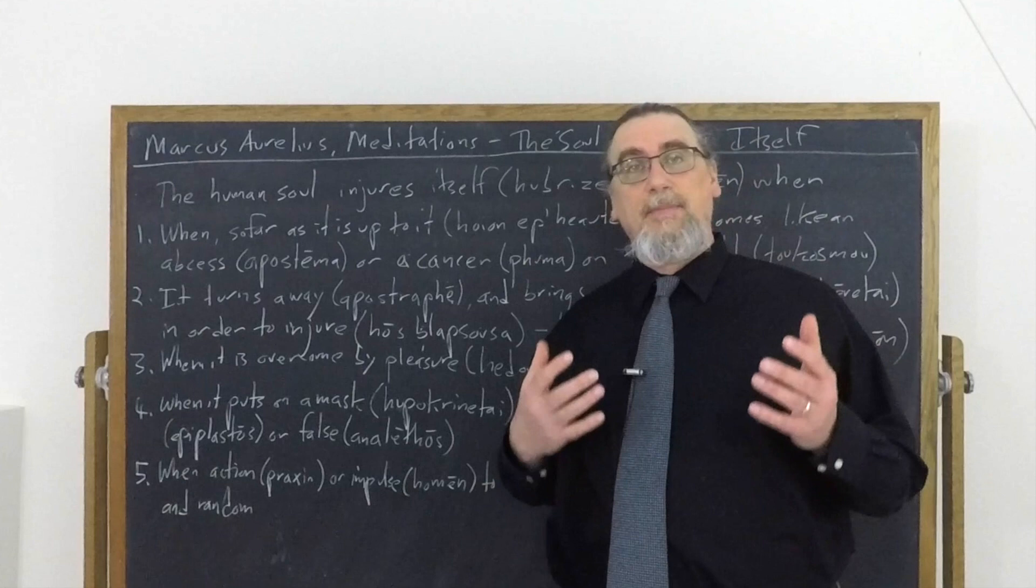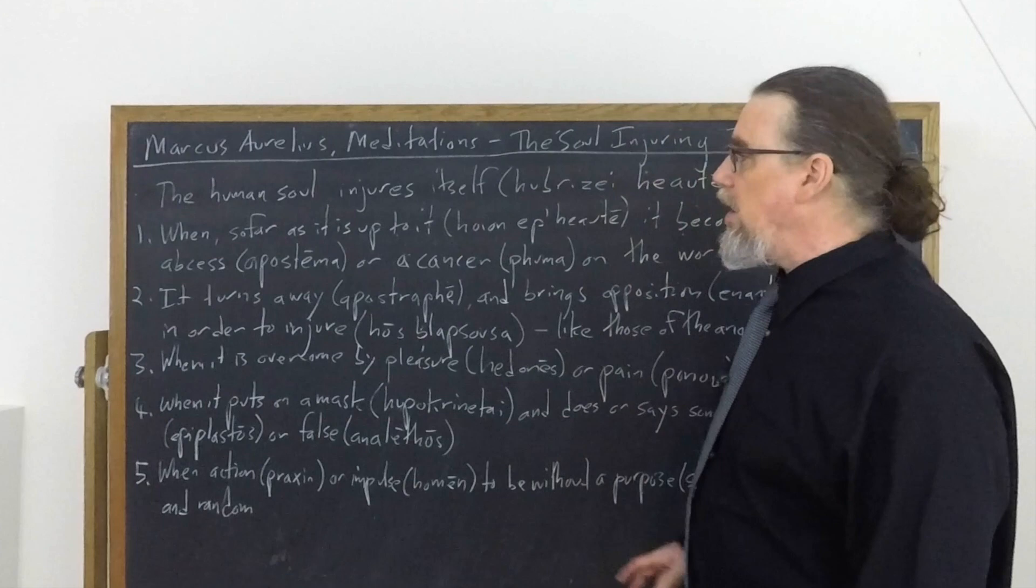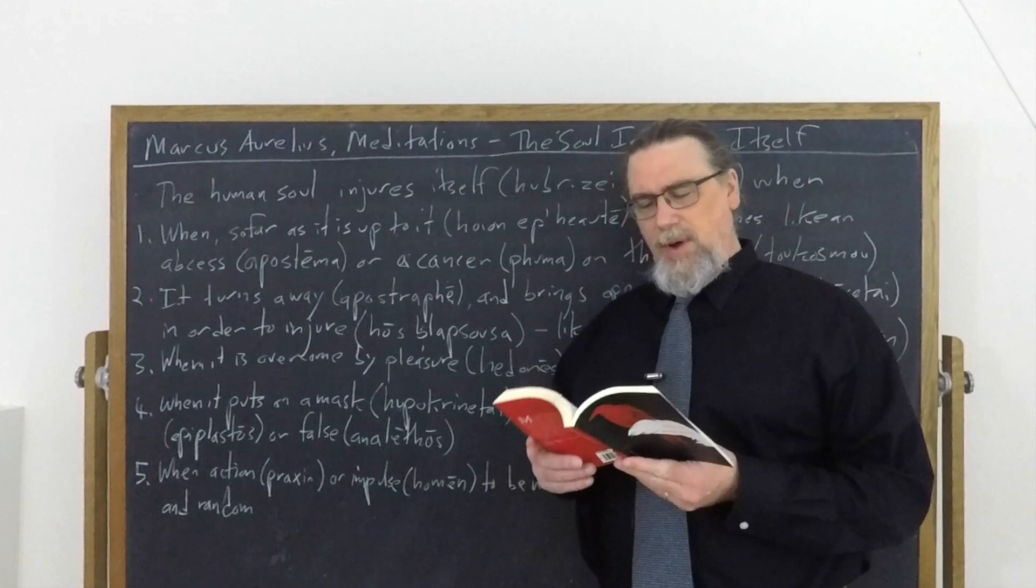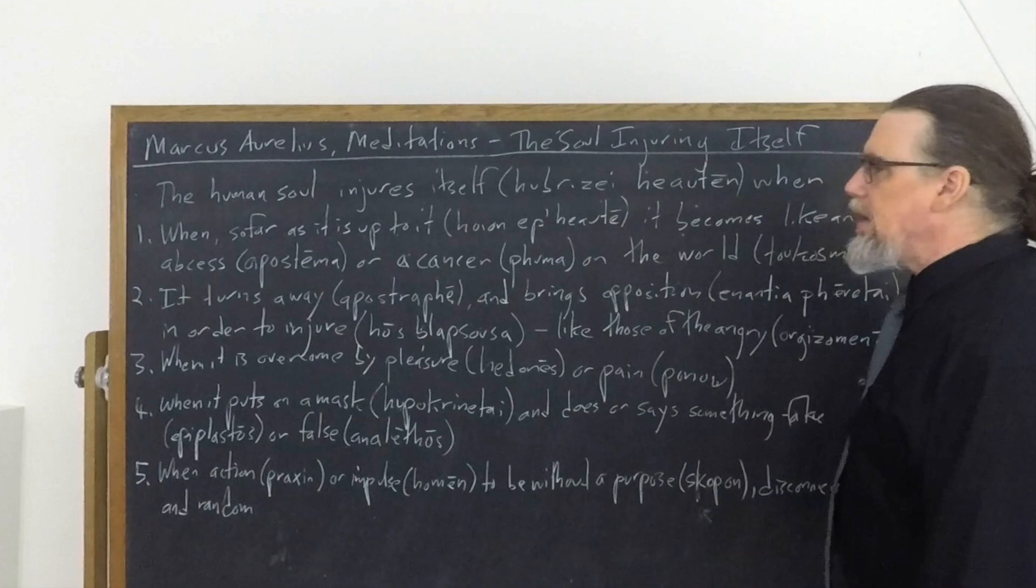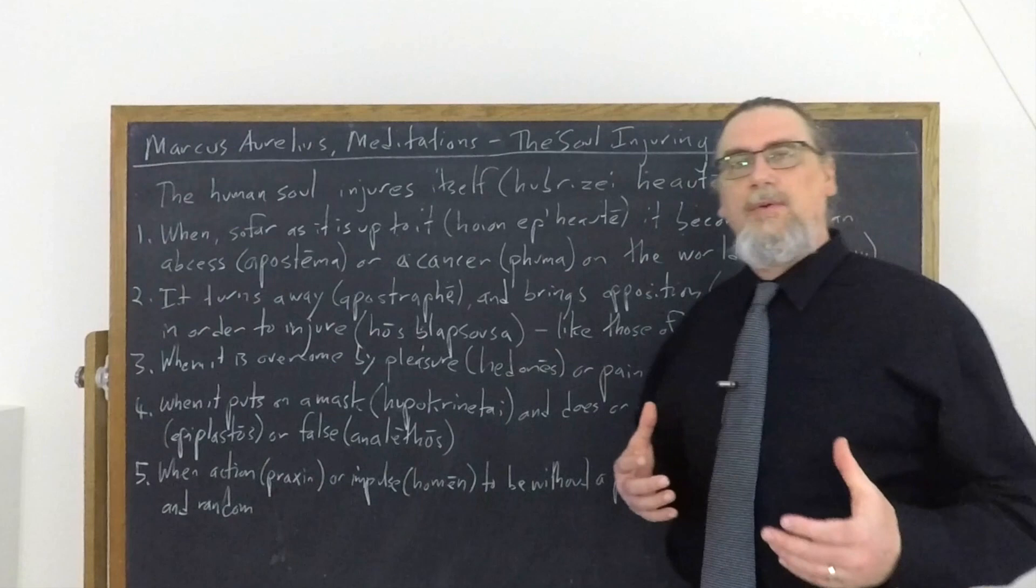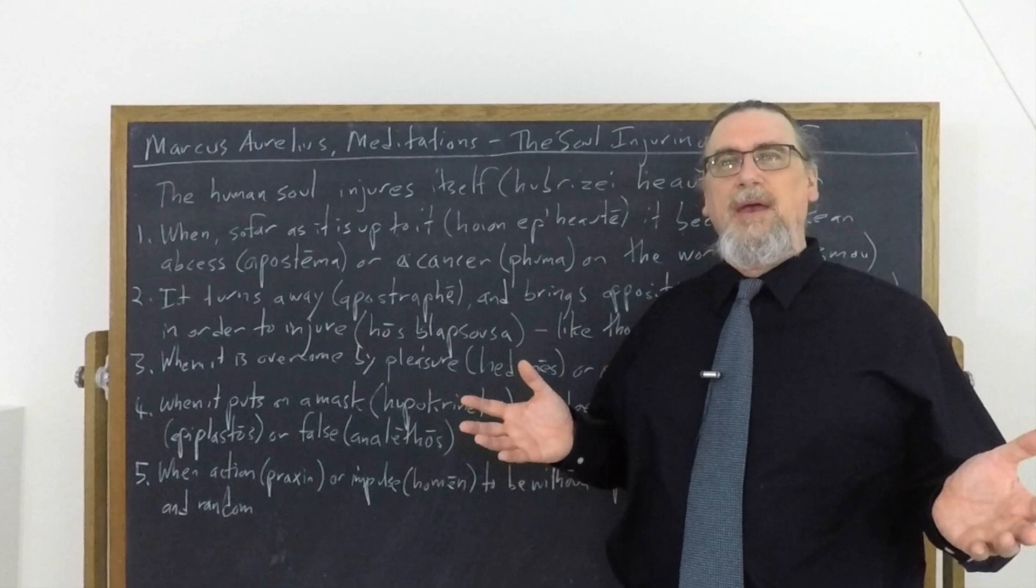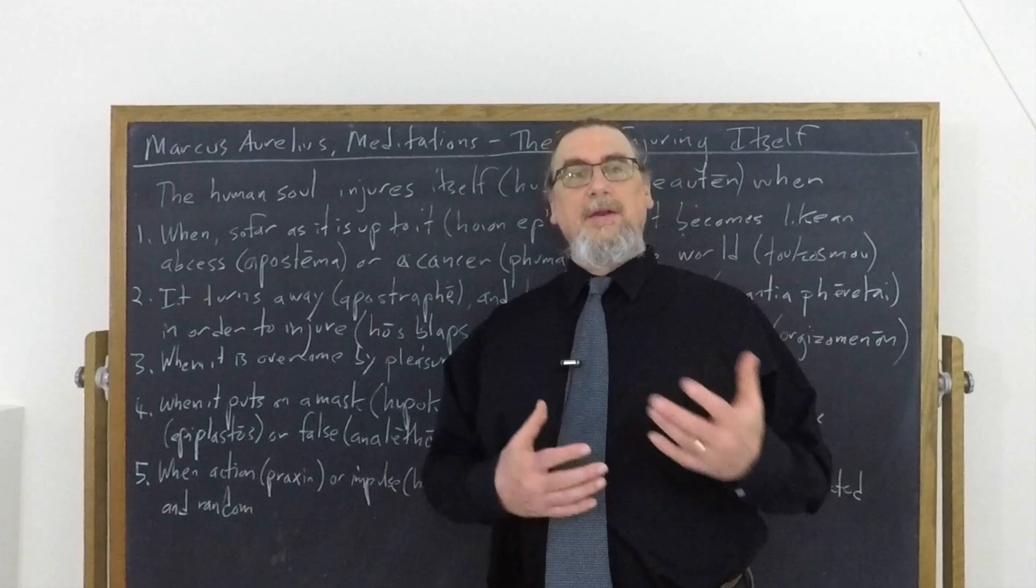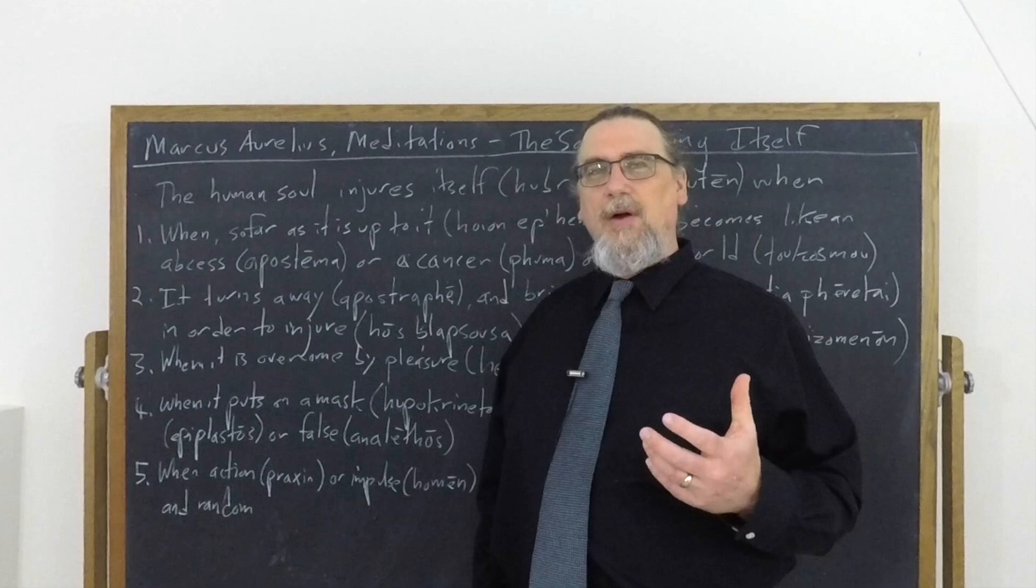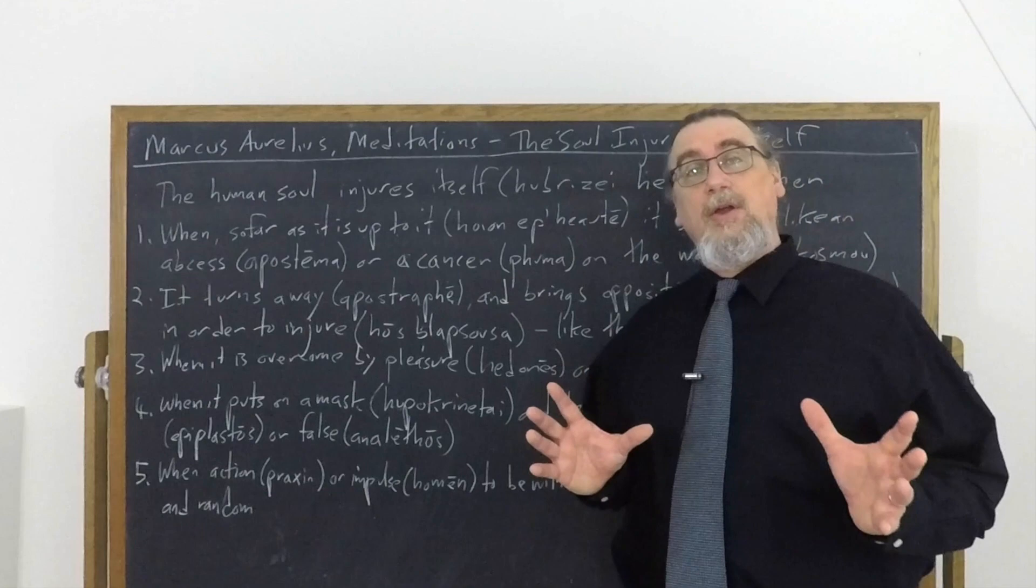And then finally, we have this very interesting one, when it allows its action and impulse to be without a purpose, to be random and disconnected. So this kind of the random and disconnected harkens back to the first one. Because if you're behaving as if you are a totally independent being and what you do has no connection to the rest of the universe, well, that can be this disconnected, literally like severed from other things or random. Now that randomness has to do with the not having some sort of purpose or goal or end in mind when you're doing things. Or I think it could also be having too many of them and like, just, oh, I'm doing this. Now I'm doing this. Now I'm focused over here. People who don't have a clear set of priorities.